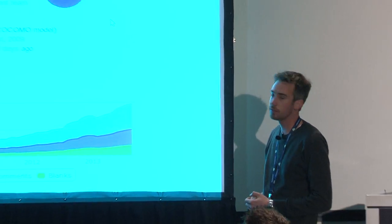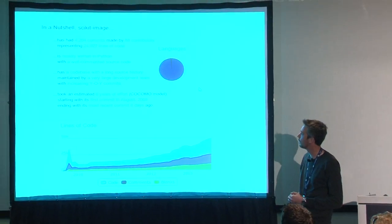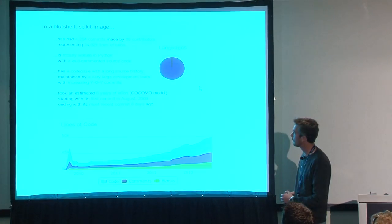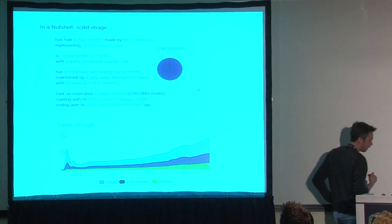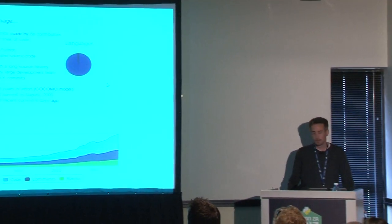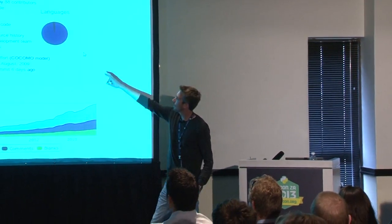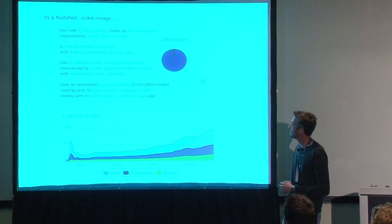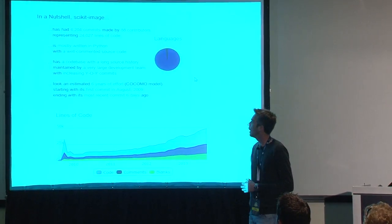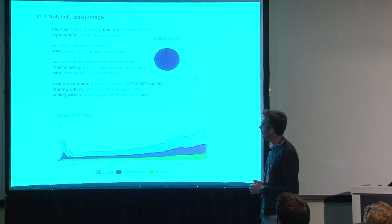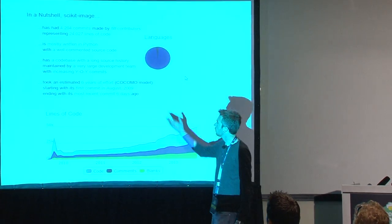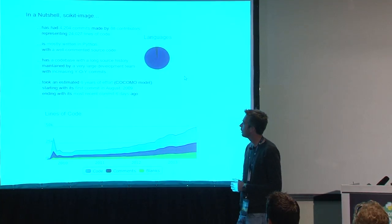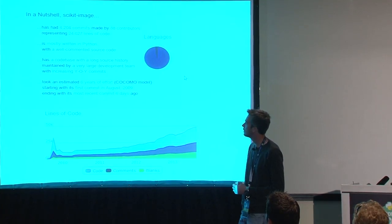From the stats, we currently have about 88 contributors — not full-time, but they have contributed — and about 25,000 lines of code. A lot of this code is written in Cython as well. The project shows increasing year-over-year commits and a large, sustainable development team.